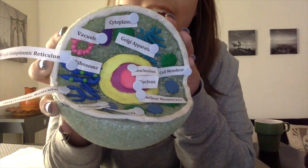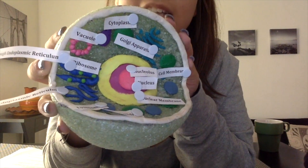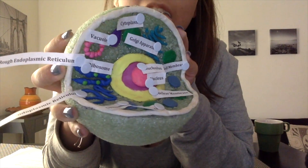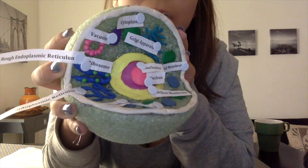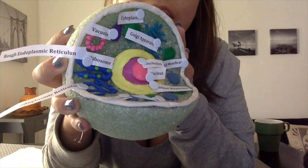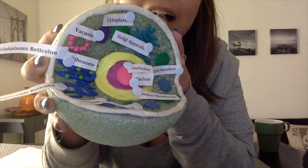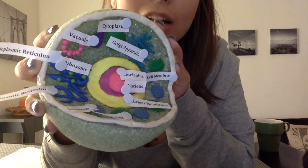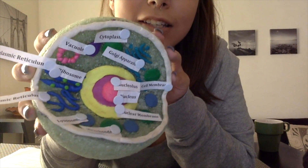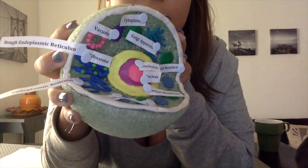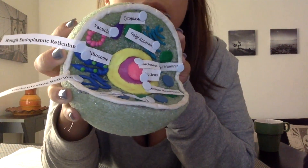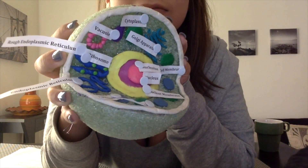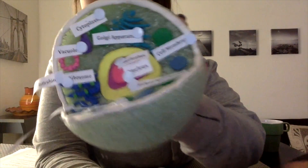Here is an up-close look of the animal cell that we studied today. You can see all of the organelles that we talked about: the vacuole, the cytoplasm, the Golgi apparatus, the cell membrane, the nuclear membrane, the nucleus, the nucleolus, the lysosomes, the mitochondria, and the smooth and rough ER. Thank you for going on this journey with me to celebrate the basic unit of life.